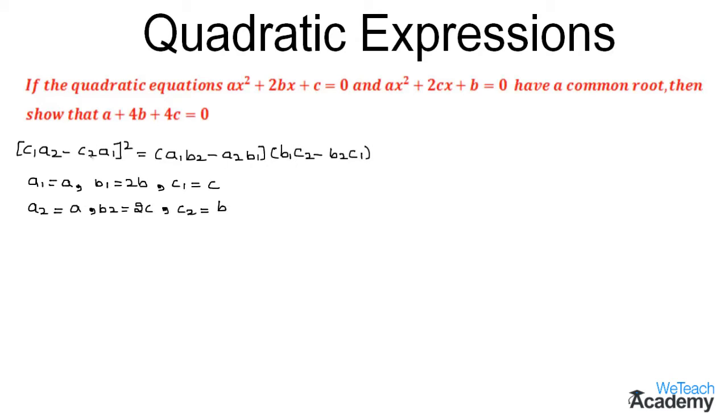Now let us substitute all these values in the formula. So we get c₁a₂ which is ca - ba whole square = a₁b₂ and it would be a(2c) - a₂b₁ and by substituting we get a(2b) into b₁c₂ which would be 2b(b) - 2c(c).